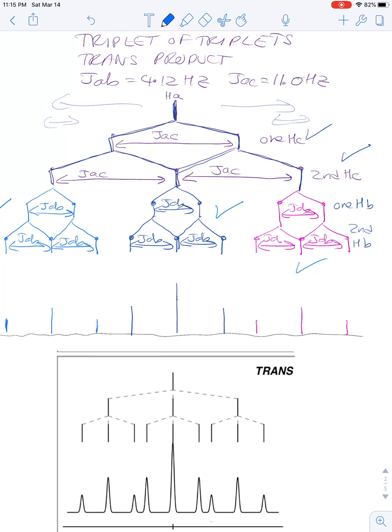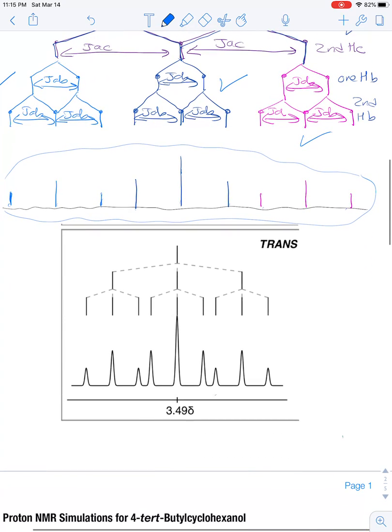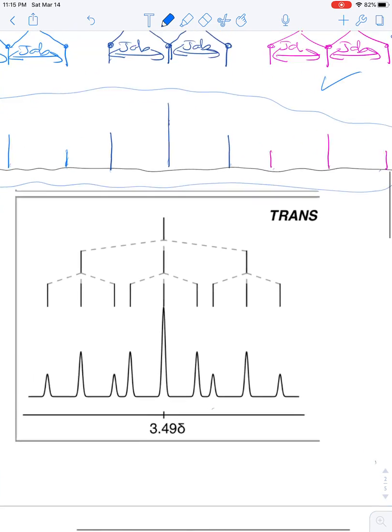If we carry that down, you can see that you have this triplet of triplets. You have a 1 to 2 to 1, 2 to 4 to 2, 1 to 2 to 1.